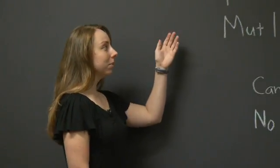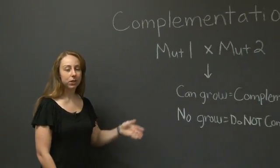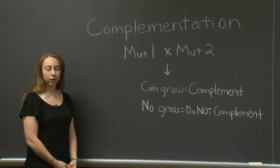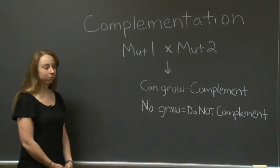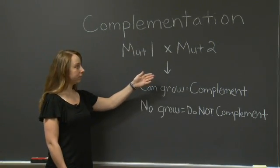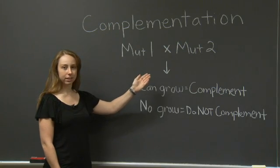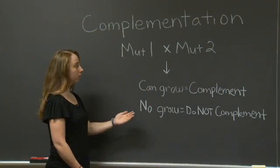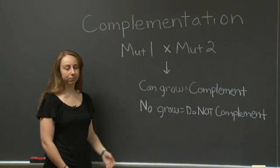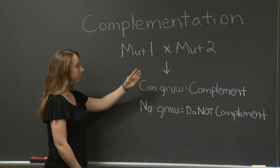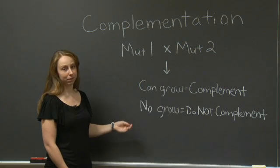So to begin, complementation is generally used to determine if two mutations fall in the same gene or if they fall in different genes. So here we have two mutants, mutant one and mutant two. Both of these have mutations in the lysine biogenesis pathway, so on their own, they cannot produce lysine. To determine if these mutations fall in the same gene or in different genes, we need to cross the two mutants together and examine their progeny.